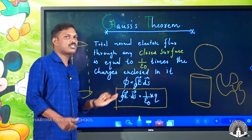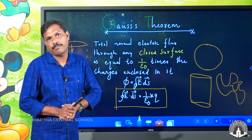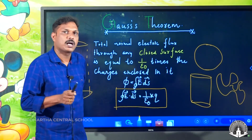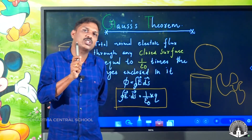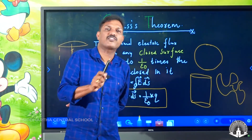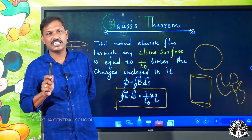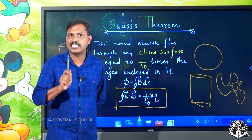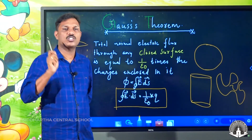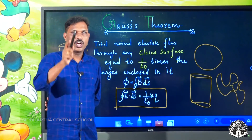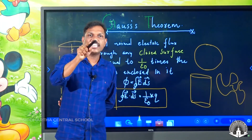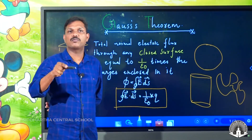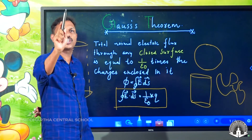Gauss theorem states that the total normal electric flux passing through a surface is equal to 1 by epsilon 0 times the charges enclosed in it. The closed integral of e dot ds is equal to 1 by epsilon 0 into q.